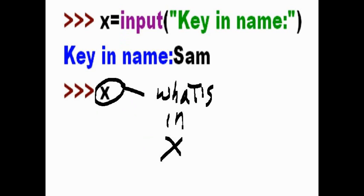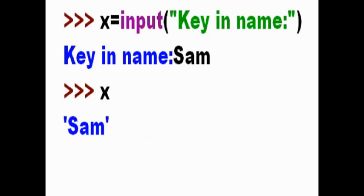Then I get the prompt and I key in x, because that's where I put my input. What's in x now? I key in x and hit enter, and I get Sam.